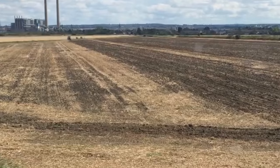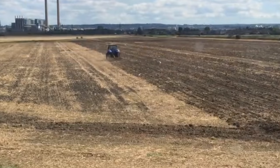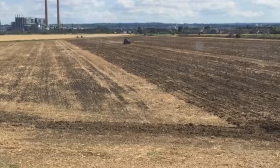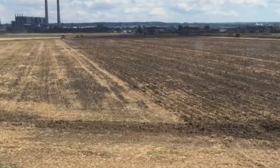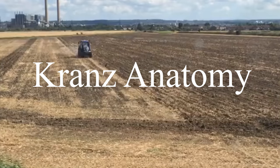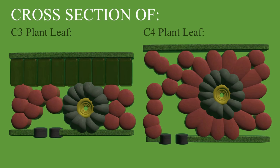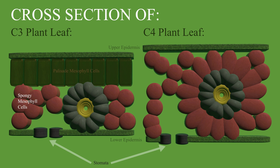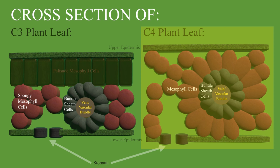However, in hotter, drier climates where water loss through transpiration is less affordable, C4 plants have the advantage. Here, it is worth investing into an adaptation called Kranz anatomy. This adaptation, while inefficient in a cold, wet climate, allows these plants to flourish in harsher conditions. Let's compare a cross-section of a C3 and C4 plant leaf. Both have an upper and lower epidermis, as well as stomata. C3 plants have two types of mesophyll cells — palisade mesophyll cells and spongy mesophyll cells — while C4 plants don't have this specialization. Both C3 and C4 plants have bundle sheath cells, which surround the vascular bundles.